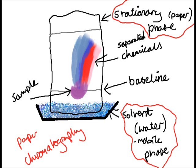One method is paper chromatography. The solvent moves up the paper. The chemicals in the sample dissolve in the solvent and move between it and the paper. When they're in the mobile phase, chemicals move up the paper with the solvent. Before the solvent reaches the top of the paper, it's removed from the beaker.